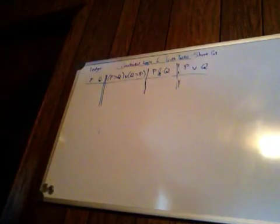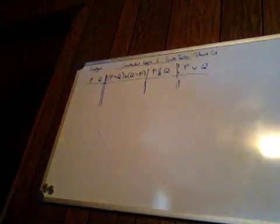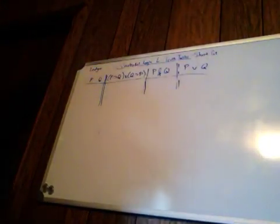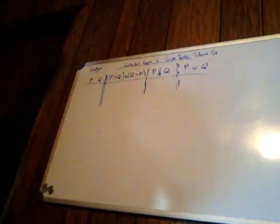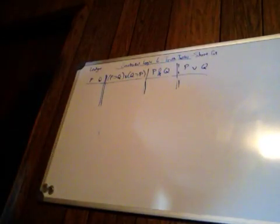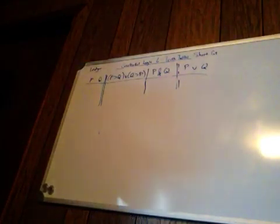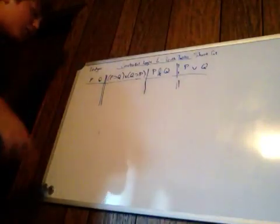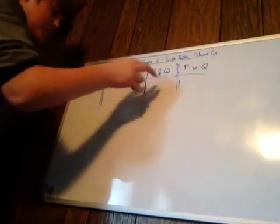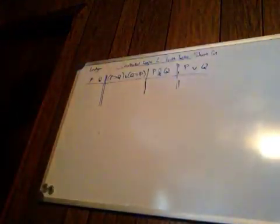I'll explain how to do one, and I'm going to do an example of a shortcut truth table here with an argument, and we're going to be proving validity. Pretty much we have here an argument — this is a premise, this is a premise, and this is a conclusion.